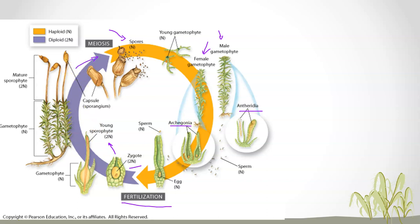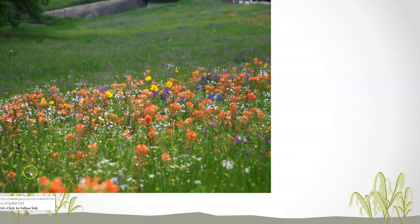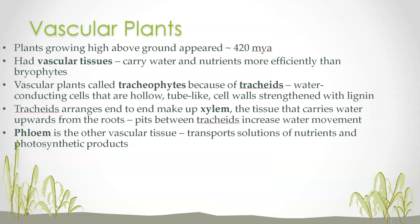Looking at the bryophyte life cycle: spores grow into the male and female gametophytes. Archegonia produce eggs; antheridia produce sperm. That combines in fertilization and the zygote develops into the sporophyte. The sporophyte produces spores. But mostly when you think of a plant, you think of wildflowers in a field, a tree — a seed-producing plant. Seed-producing plants are also vascular plants.